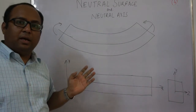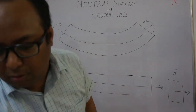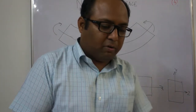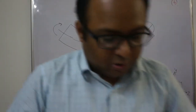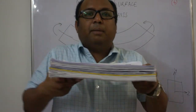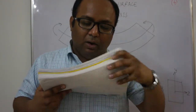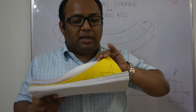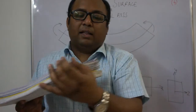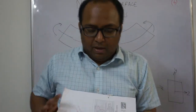Let us now understand the meaning of neutral surface and neutral axis. I am trying to demonstrate it with the help of this set of pages. Suppose this is a beam. The yellow/pink color you are seeing is the neutral surface. This surface is the neutral surface, and this line you are seeing here is the neutral axis. Now let me explain how and why.